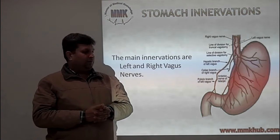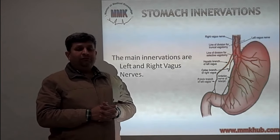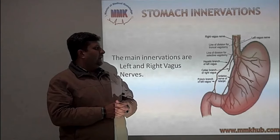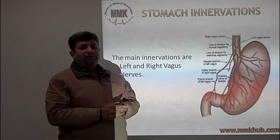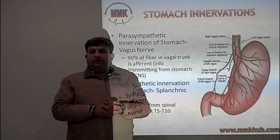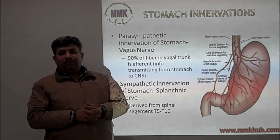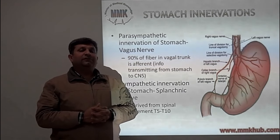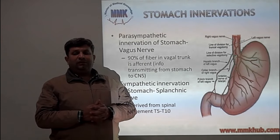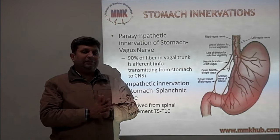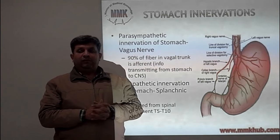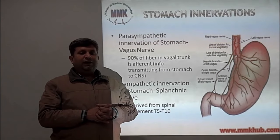In surgeries on the vagus nerve, vagotomies are performed. A truncal vagotomy involves division of the nerve trunks. In a selective vagotomy, one branch of the vagus nerve is transected to reduce acid secretion in that portion of the stomach. About 20% of fibers in the vagus nerve are afferent, transmitting signals from the stomach to the central nervous system. The sympathetic innervation of the stomach is via the splanchnic nerves, derived from spinal segments D5 to D10.